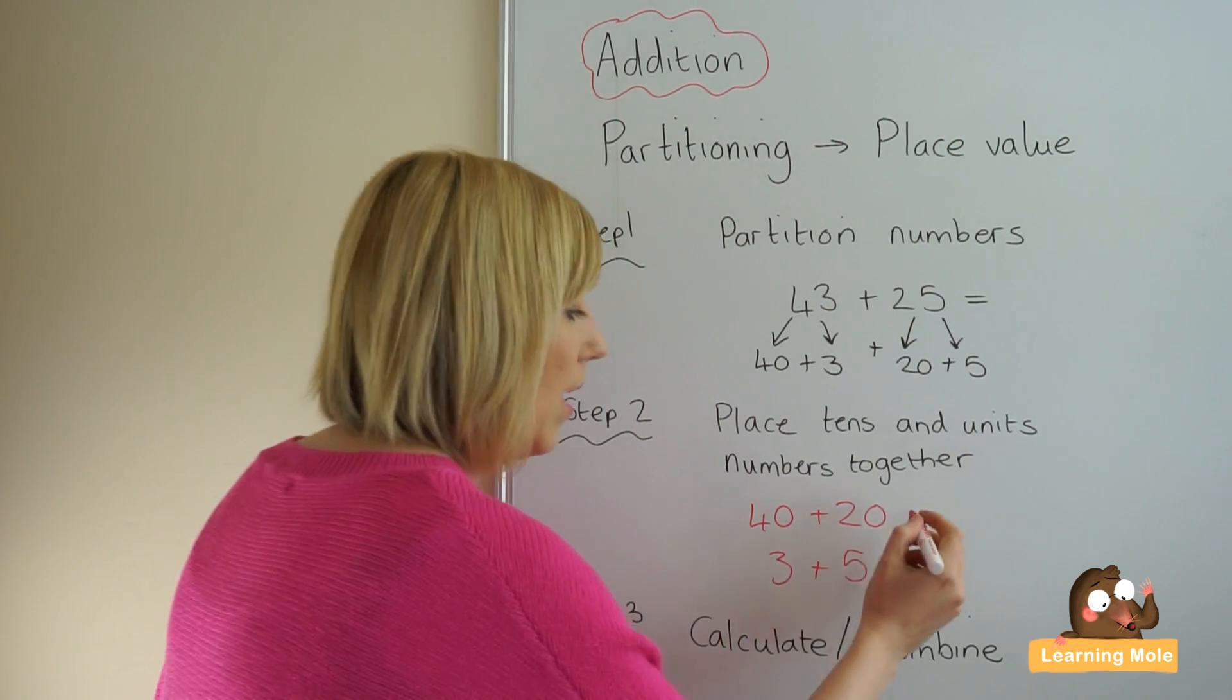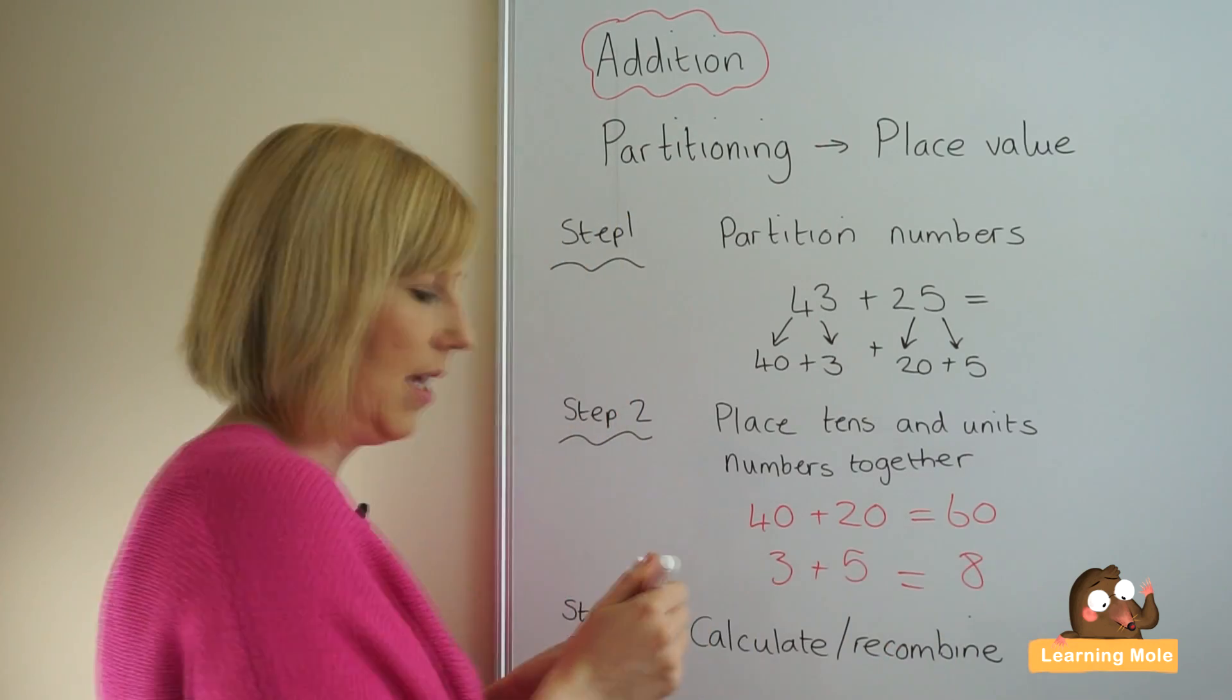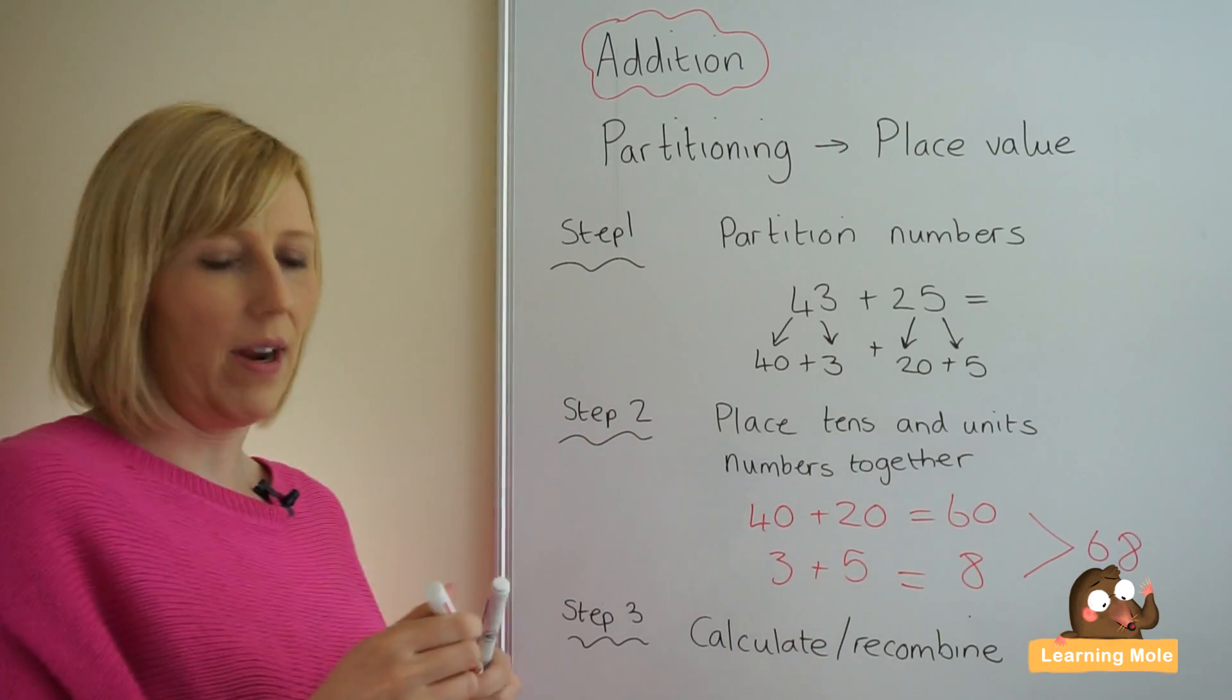So once you've calculated what they actually are, which is 60 and 8, this is then recombining them to get 68, your answer.